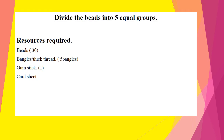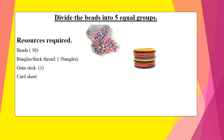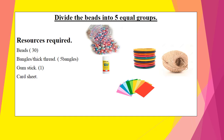Now children, you have to divide the beads into five equal groups. For this activity the resources required are: 30 beads, five bangles or thread, a game stick, and a card sheet. What you have to do is paste five bangles on the card sheet, or make five circles with the thread on the card sheet, and paste the 30 beads equally in the bangles or circles.